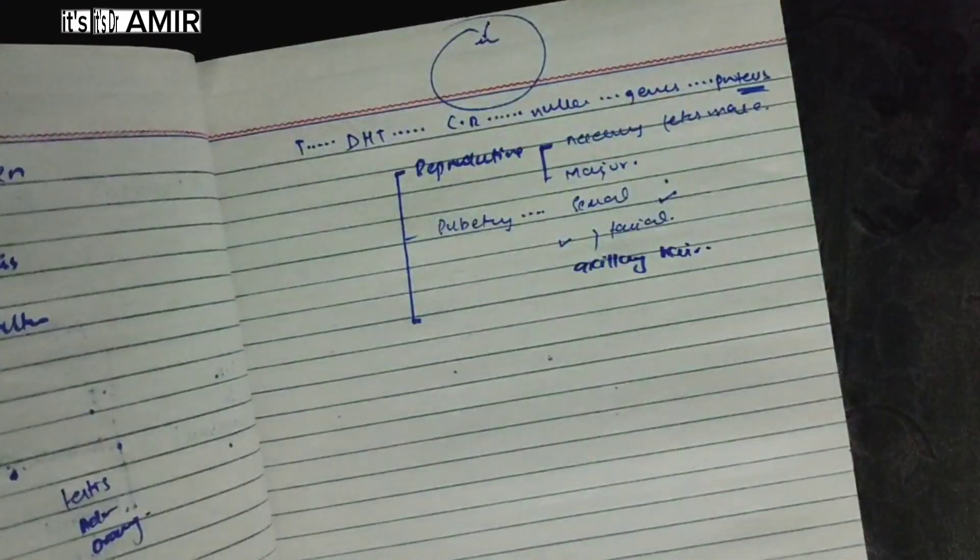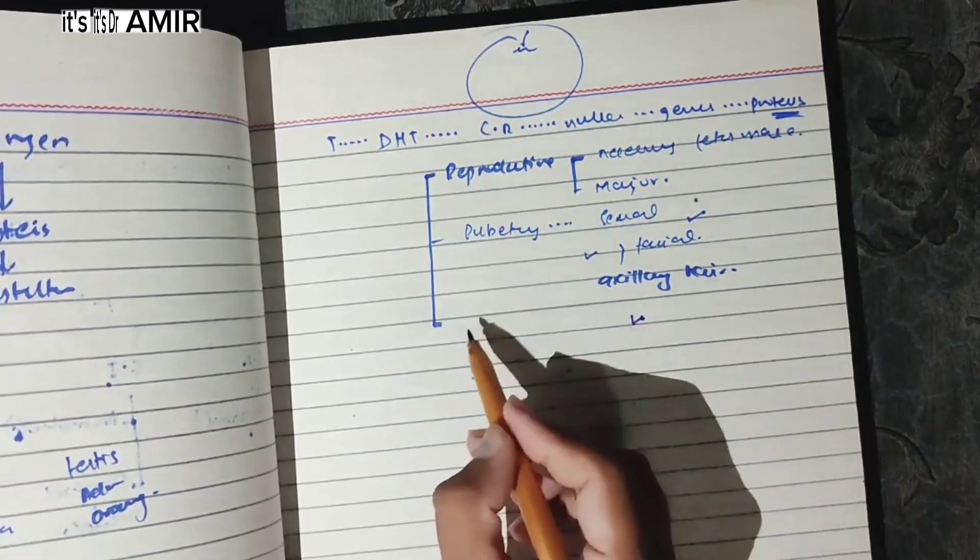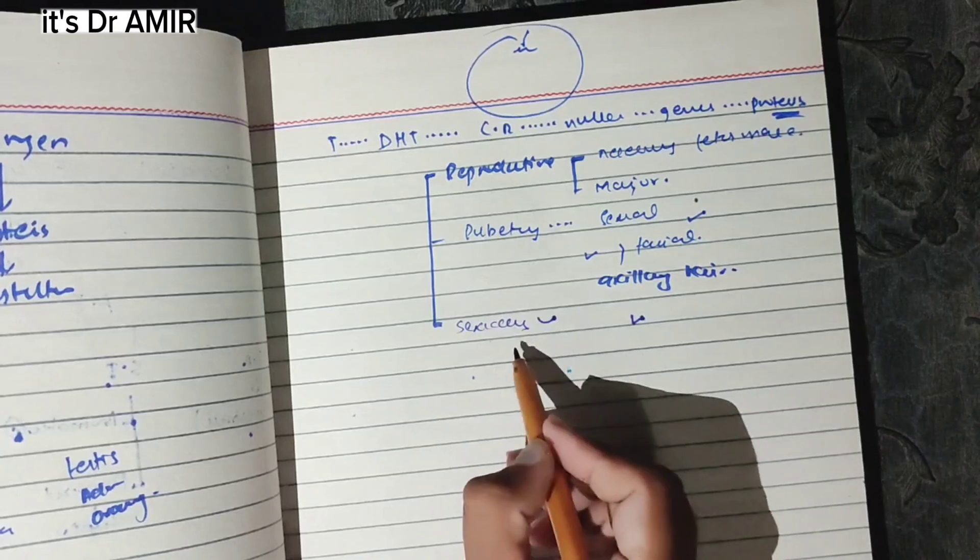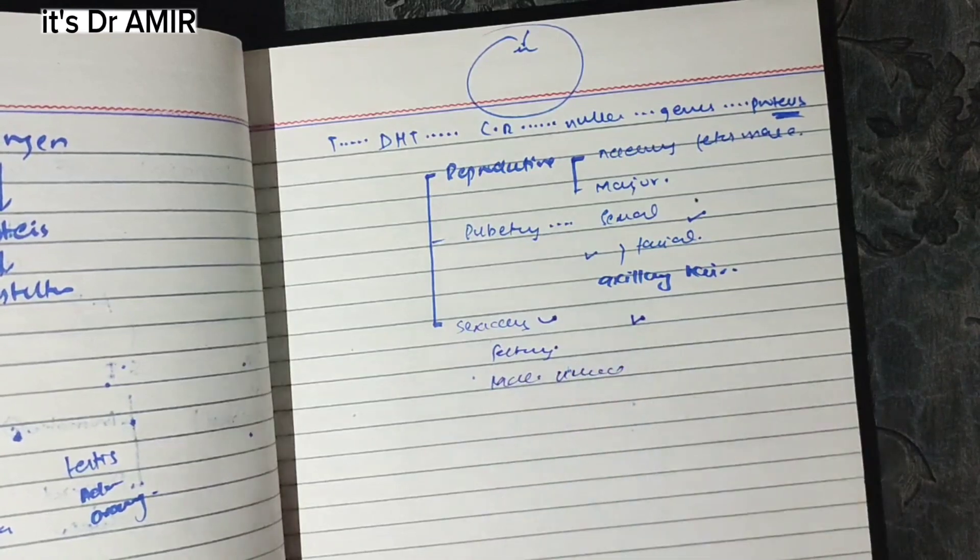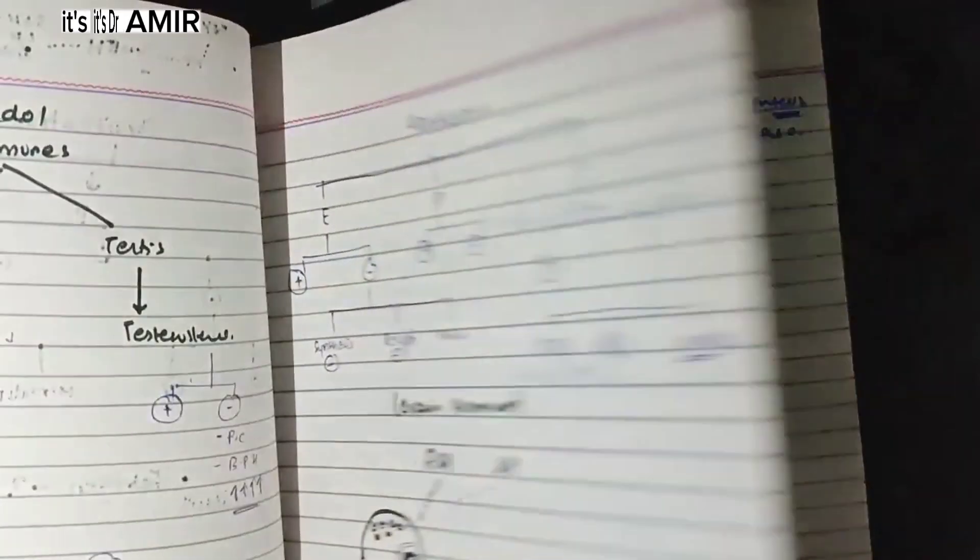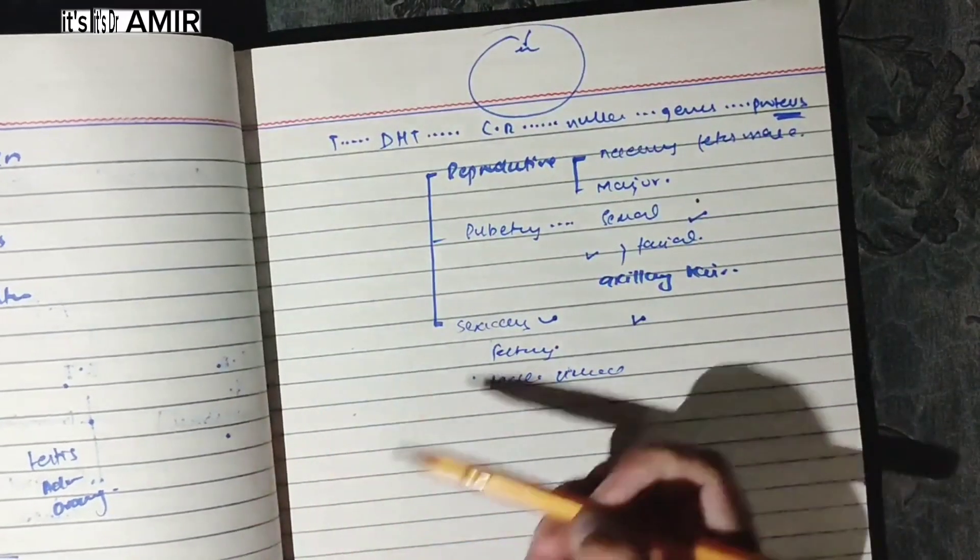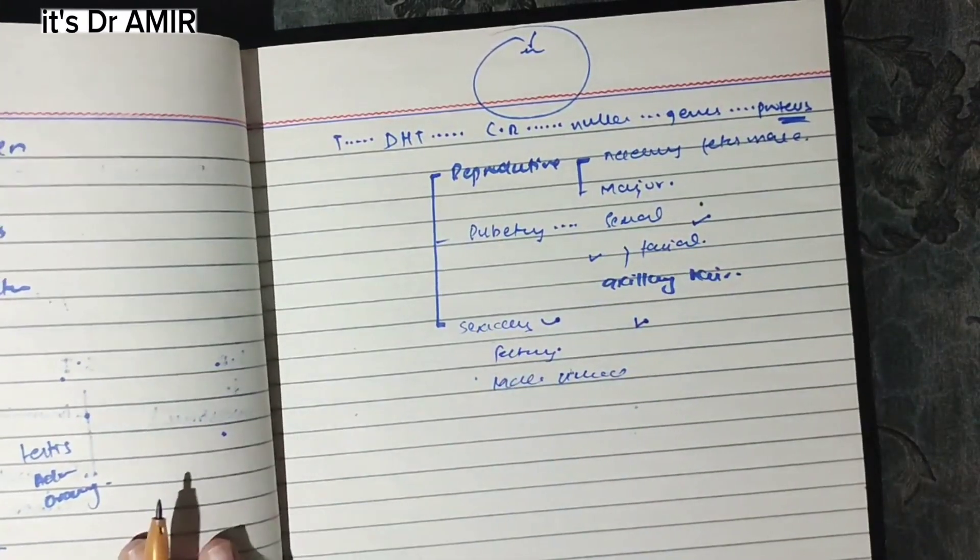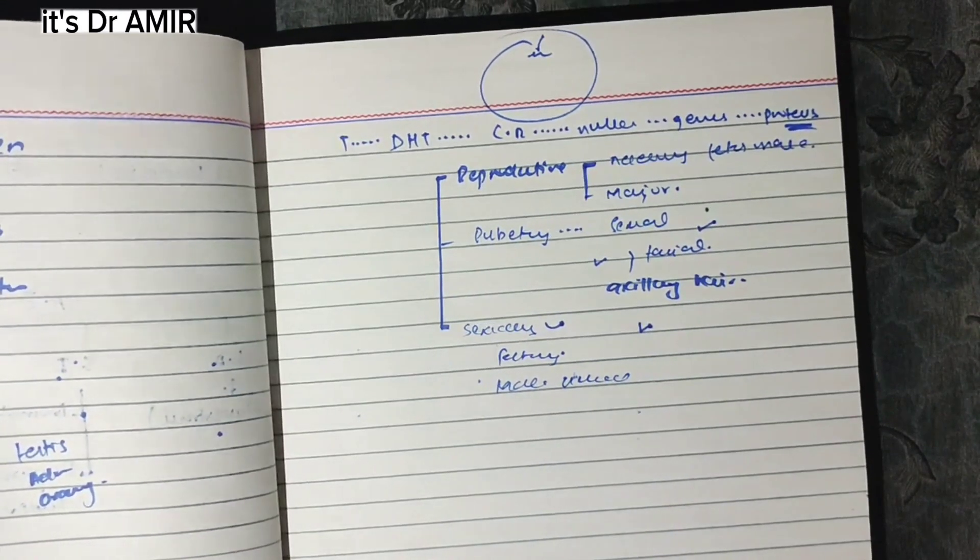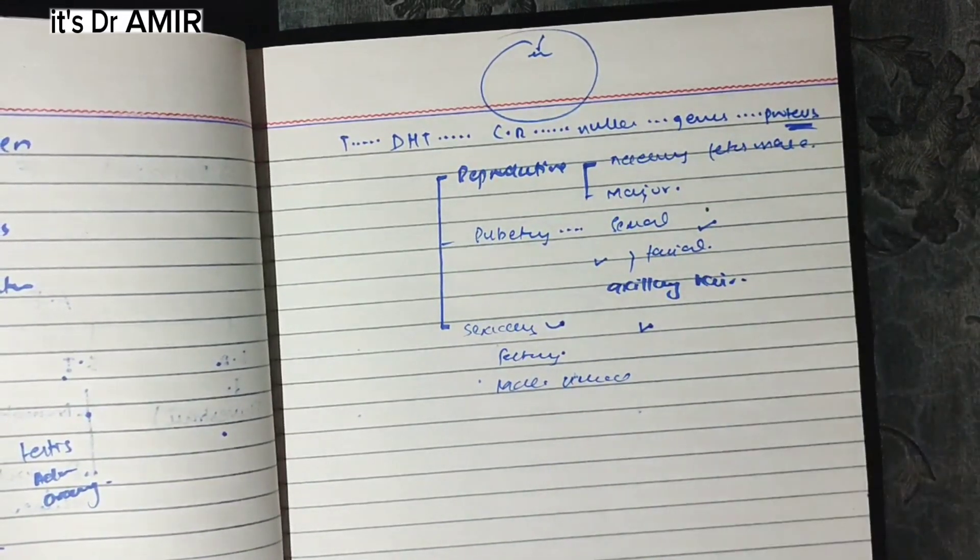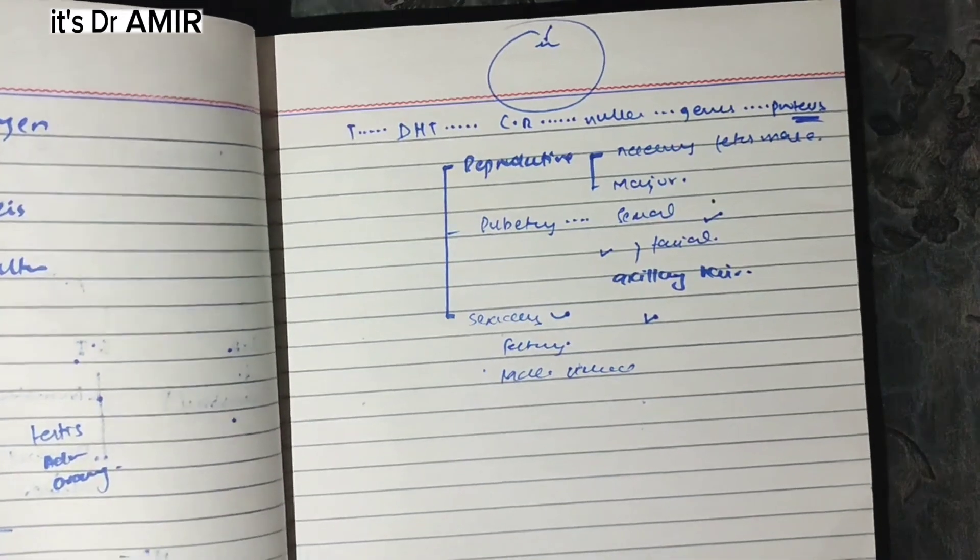Pubic and axillary hair growth also changes. Secondary male sexual characteristics develop. Hirsuitism is an adverse side effect when females take it, but facial hair growth in the male region, axillary region, and pubic region are normal. The reproductive organs increase their size after puberty.